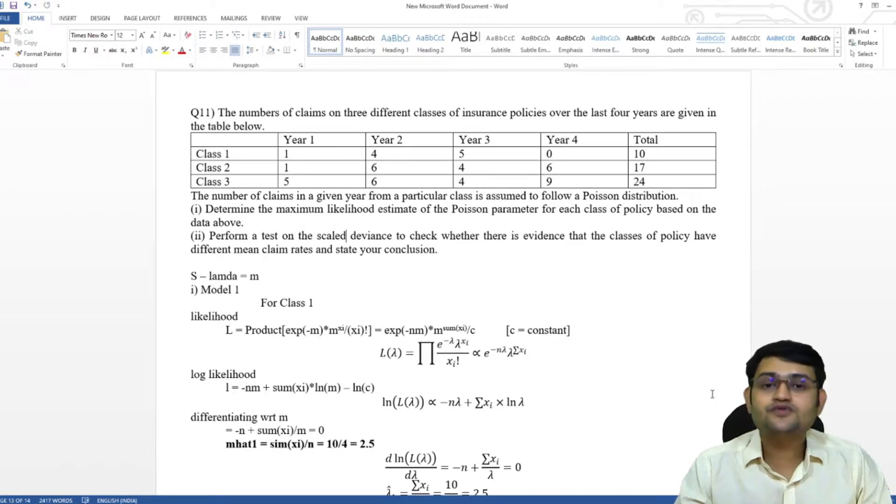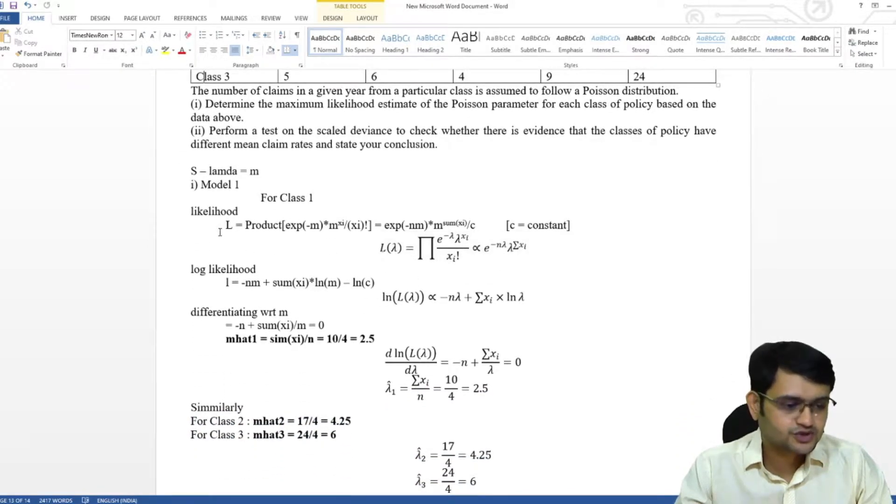Let's take this question from GLM. In this question, we have to figure out the maximum likelihood estimate for model 1, model 2, model 3 as well as complete model. So it's just a basic Poisson distribution question.